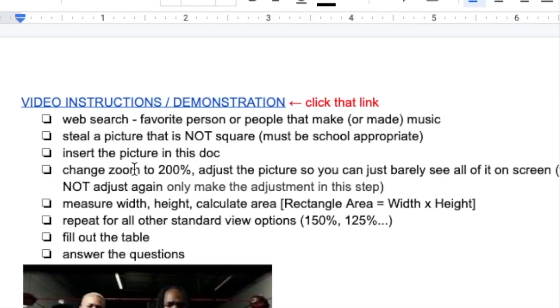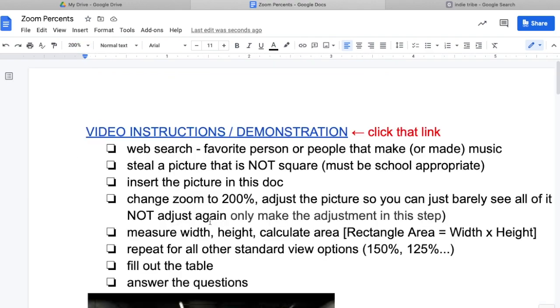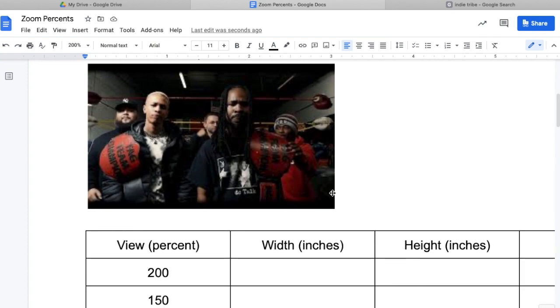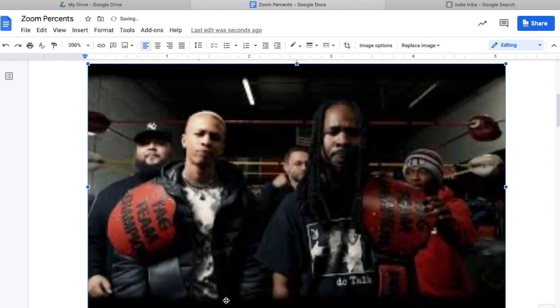Change the zoom to 200%, adjust the picture so that you can just barely see all of it on screen. Change the zoom up here where it says 100% - you want to change that to 200%. Adjust the pic so that you can just barely see it on screen. We'll grab a corner of this pic and drag it. I can see all of it. If I make it much bigger, I'm not gonna be able to see the top and bottom of it.